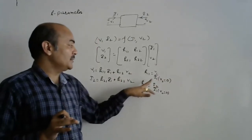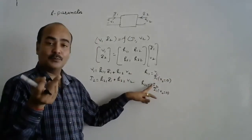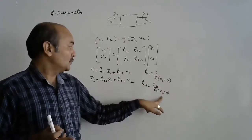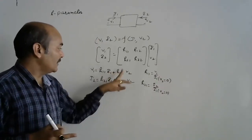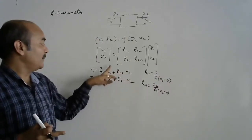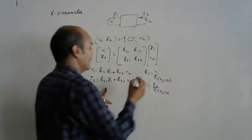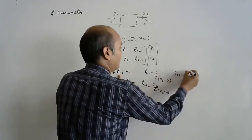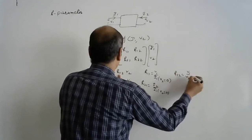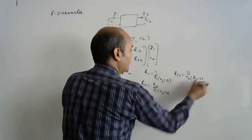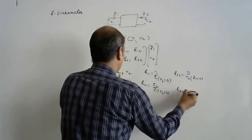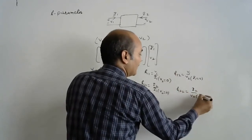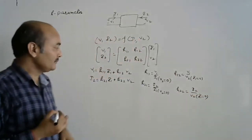H21 is the ratio of output current to input current — it is the forward current gain with output port short circuit. For H12 and H22, we set I1 = 0. H12 becomes V1/V2 with I1 = 0, and H22 is I2/V2 with I1 = 0.